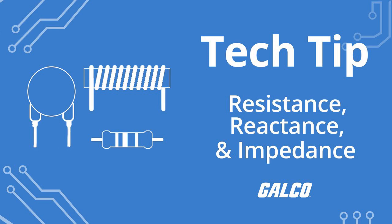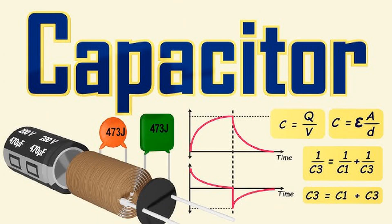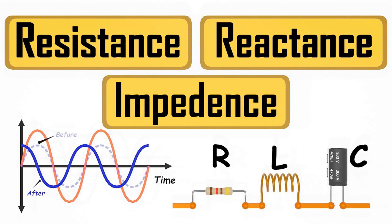They can be used in voltage dividers, attenuators, and filters to modify the characteristics of electrical signals. Voltage regulation: resistors are used in voltage regulator circuits to stabilize and regulate voltage levels. By adjusting the value of the resistor in the feedback loop of a voltage regulator, the output voltage can be controlled and maintained at a constant level. Heating elements: certain types of resistors, such as wire-wound resistors and resistive heating elements, are used for generating heat in applications such as electric heaters, ovens, and industrial processes. Timing circuits: resistors, in combination with capacitors, are used in timing circuits such as RC (resistor-capacitor) circuits and RC oscillators. The time constant of these circuits, determined by the resistance and capacitance values, determines the timing behavior of the circuit.